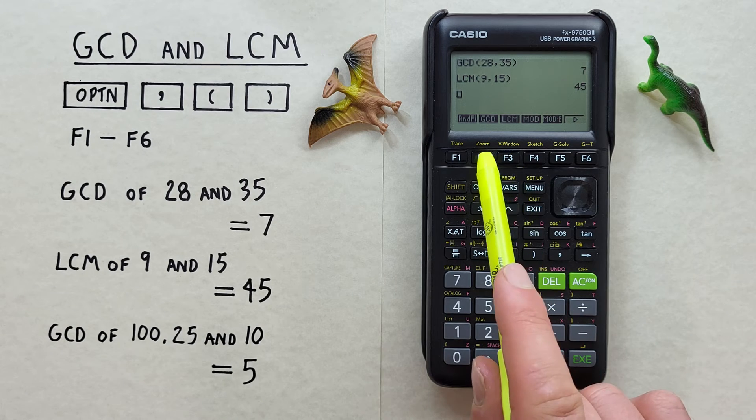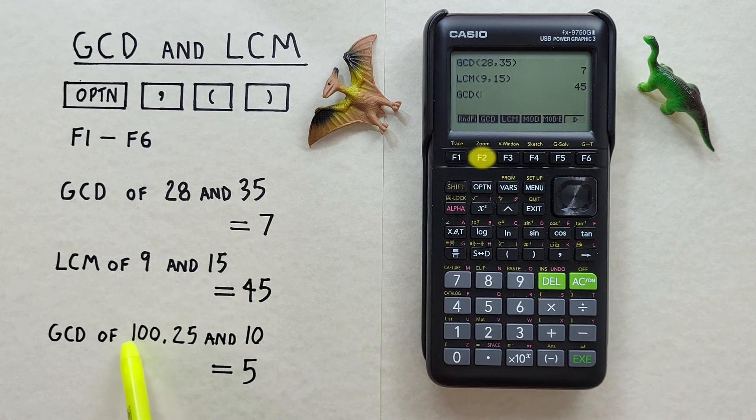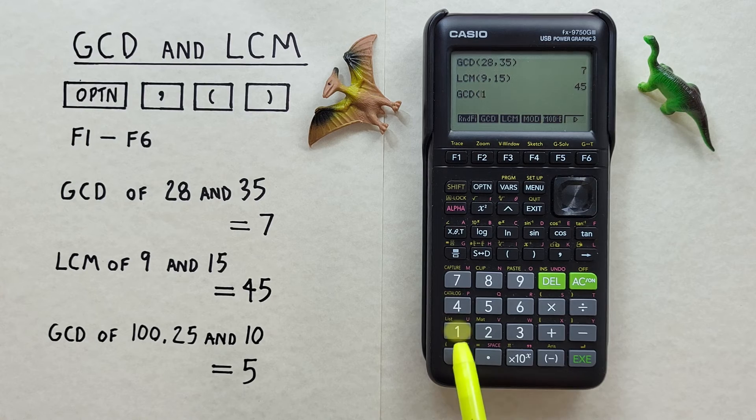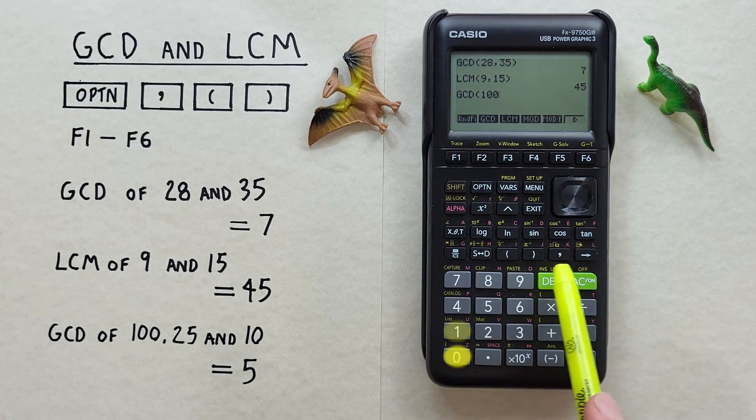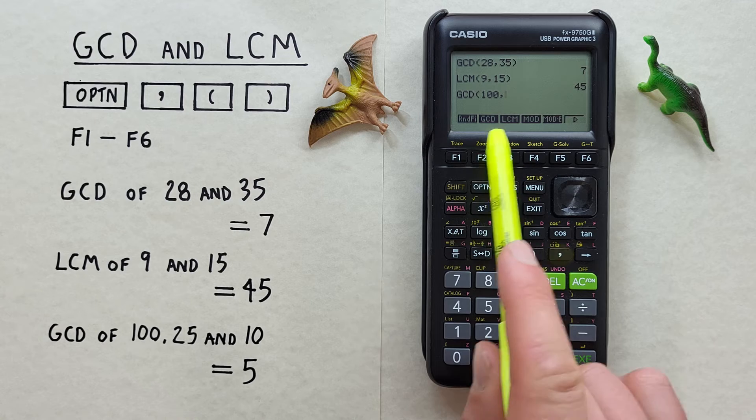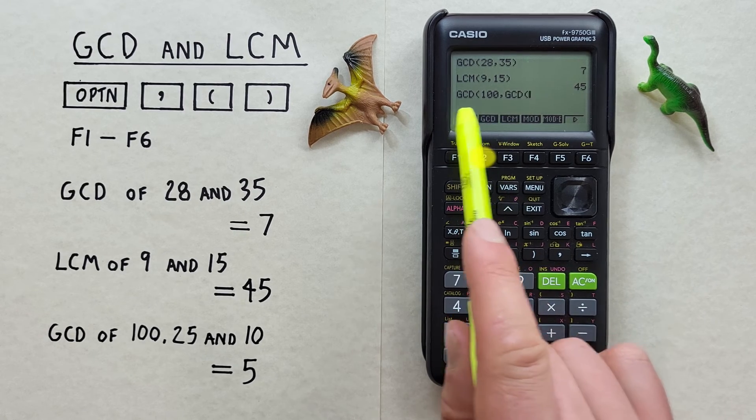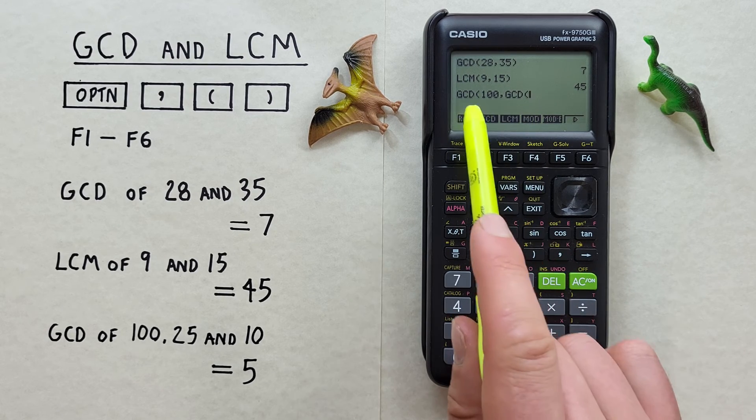we start with the GCD again, and then the first number, which was 100, hit a comma, and then we hit the GCD again. There we go, we have a second GCD function inside the first,